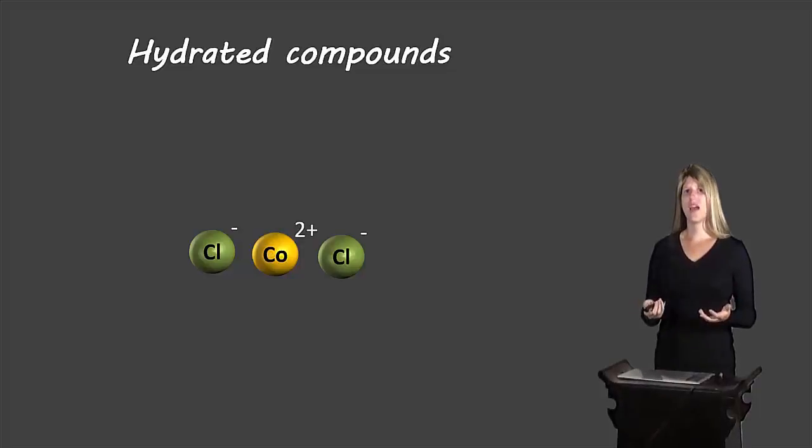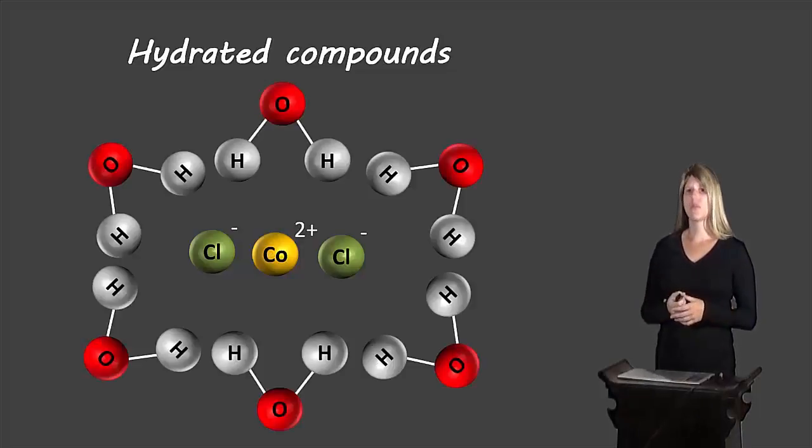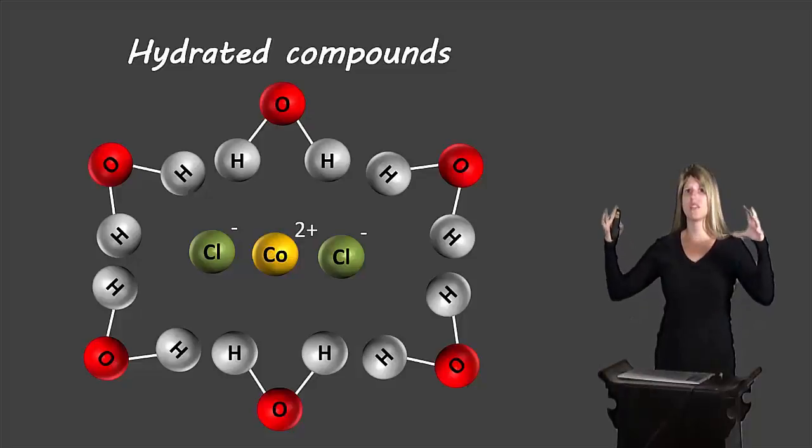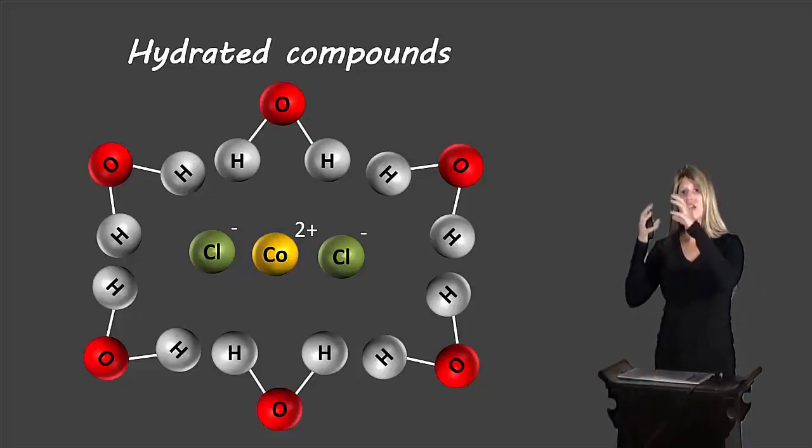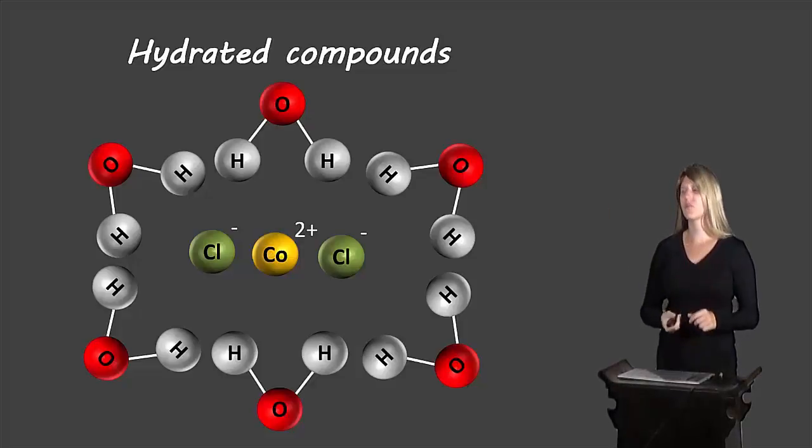However it can also come in a hydrated form, for example like this. So here there are six waters attached to the cobalt chloride. It actually comes as a big group of elements all attached together. It's actually surrounded in a cage by water and then the next cobalt chloride is surrounded in a cage by water and so on. So all of them are surrounded by water.